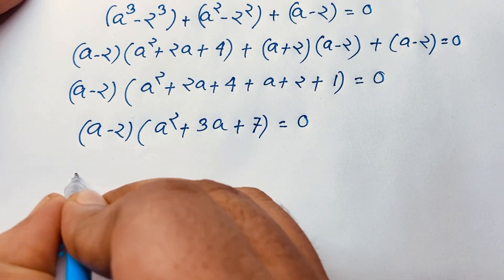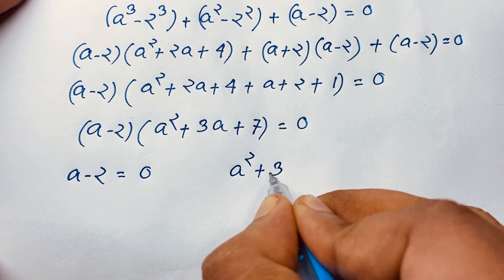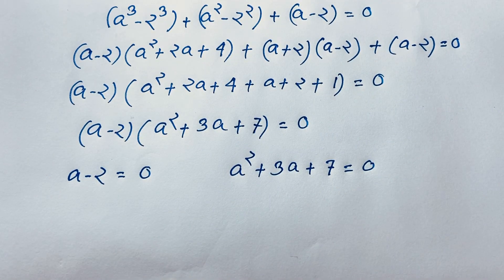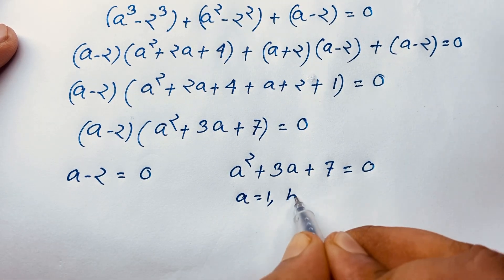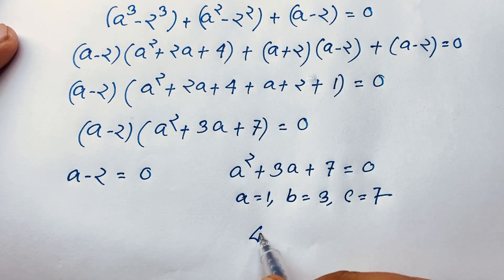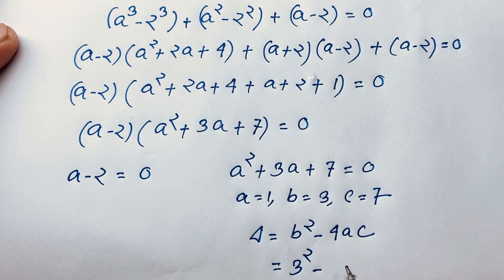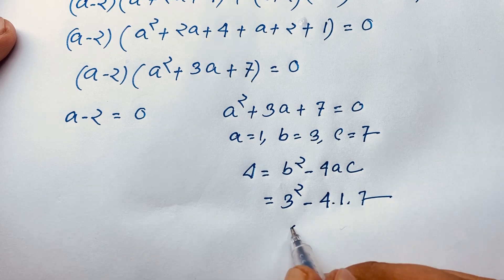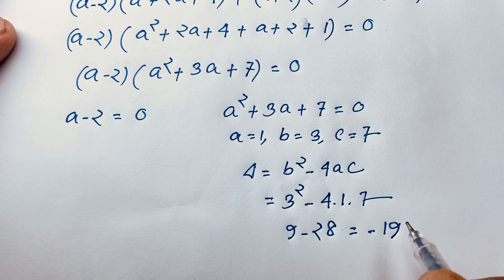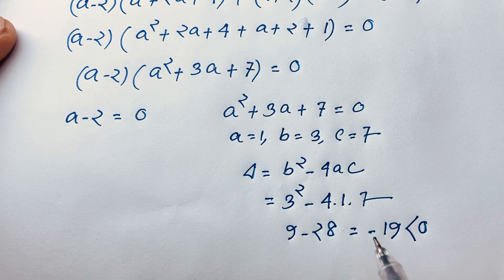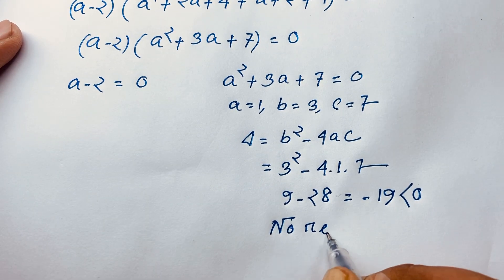We have two cases. Case 1: a minus 2 equals 0. Case 2: a squared plus 3a plus 7 equals 0. For case 2, with a=1, b=3, c=7, the discriminant delta = b squared minus 4ac = 9 minus 28 = negative 19, which is less than zero. So this gives only complex (imaginary) solutions — no real solution.